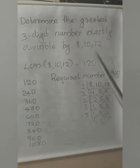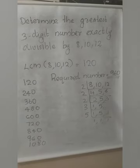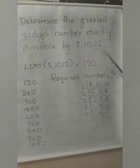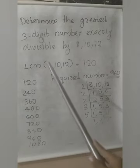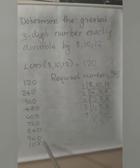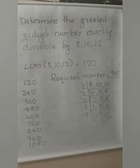Here, why are we finding the LCM? By seeing the word 'greatest', don't get confused and think we need to find the HCF. No — 'greatest' here refers only to the 3-digit condition. We need to find the LCM because we need exact divisibility. So we found LCM = 120, and then confirmed the greatest 3-digit number in 120's table is 960.